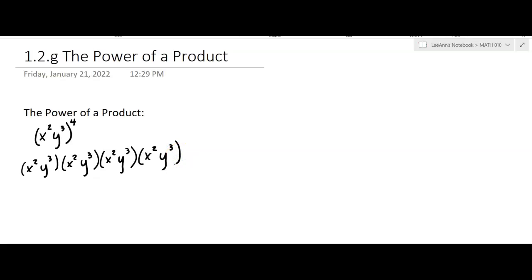Well, it's all multiplication. So if you took all the x squareds and you put those together, and then you took all the y cubeds and you put those together, then you'd have x to the eighth, it looks like, and y to the twelfth. That would be the answer.